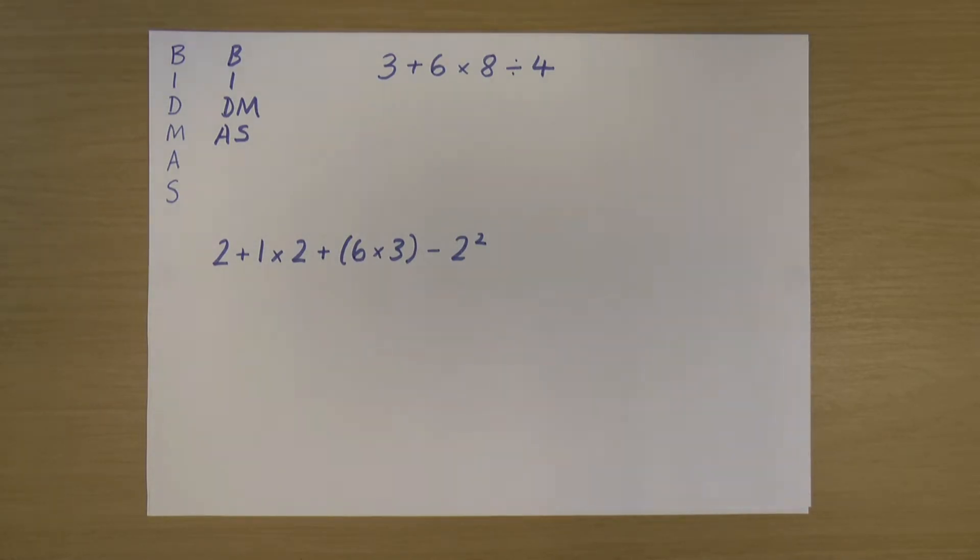Do I have any divisions or multiplications? Yes, I do. I have a multiplication there, and I've got a division there. So because I have both, those have equal priority over each other. So I'm going to work left to right.